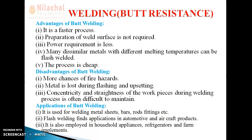Here are the advantages, disadvantages, and applications of butt resistance welding. First, the advantages: number one, it is a very fast process, meaning the production rate is very high. Number two, preparation of the weld surface is not required, as we do not need any cutting, so preparation is very fast. Number three, power requirement is less because the cross-sectional area being used is very small, so electricity consumption is low.